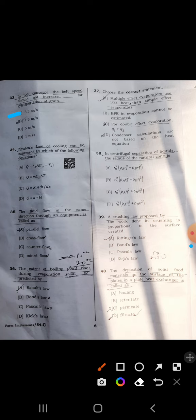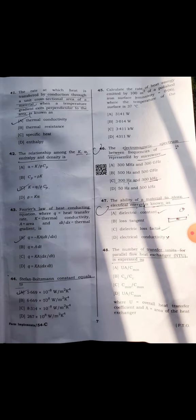Fortieth question: deposition of solid food material on the surface of the plate in a plate heat exchanger is called fouling. Actually, B fouling is correct.